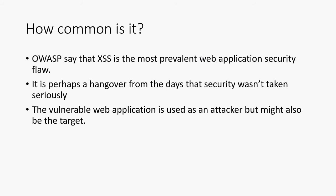So how common is it? OWASP say that cross-site scripting - called XSS, so people don't get confused with cascading style sheets which we usually call CSS - is supposedly the most prevalent web application security flaw. So it's the most common, but the good news is it's also one of the easiest things to fix. I'm guessing it's possibly a hangover from the days when security wasn't taken seriously. Web applications are really just designed to get data from the user, store it in the database, and then echo that information back out to the user at some later date.